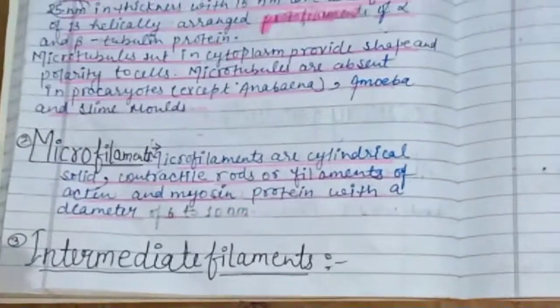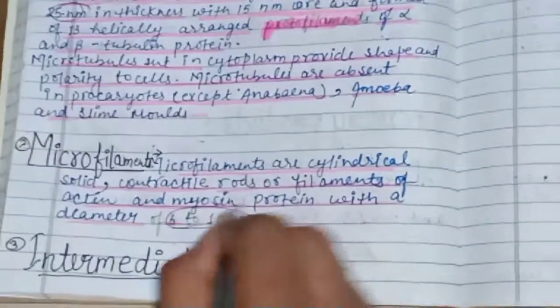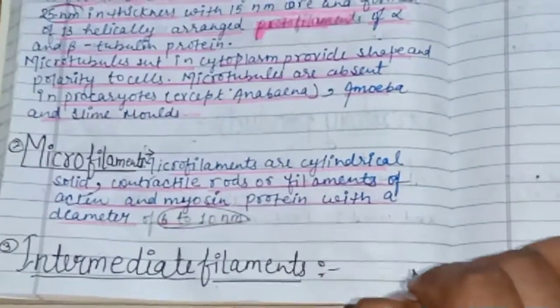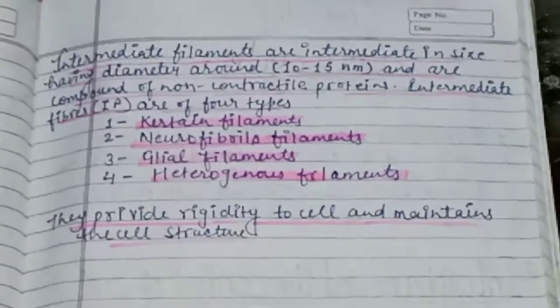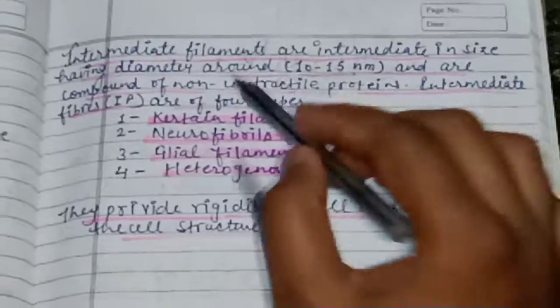Now let's discuss intermediate filaments. Intermediate filaments are intermediate in size, with a diameter around 10 to 15 nanometers, and are composed of non-contractile proteins.